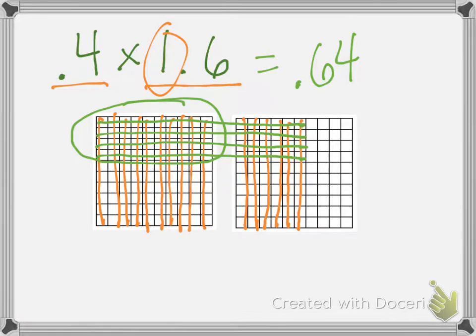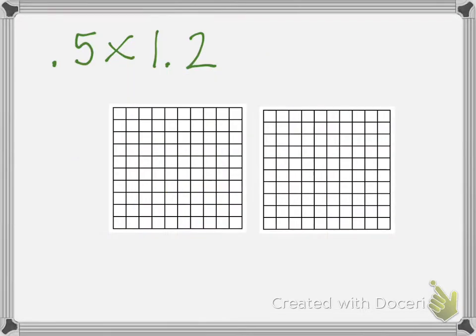The part to be careful here is don't just do the 4 tenths and 1. It has to be of the 1 and 6 tenths, which is why we went all the way across to here. So let's do another one like this.